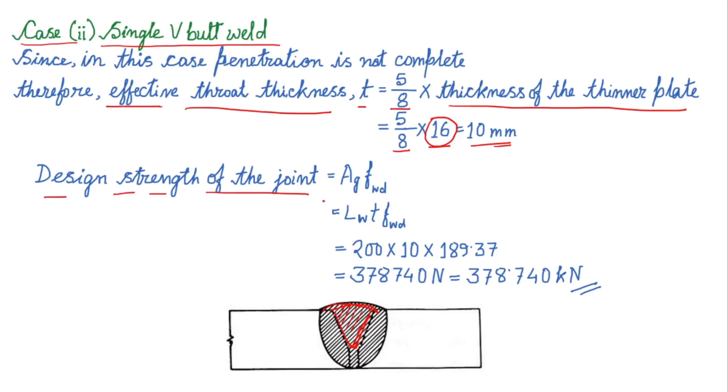Similar to the previous case here also we have to calculate the design strength of the joint which is equal to Az into fwd. So here length is 200mm, then throat thickness 10mm, and then fwd is 189.37, so finally the design strength of the joint is calculated as 378740 Newton or 378.740 kN. So in this way in this problem we have calculated the strength of the joint.